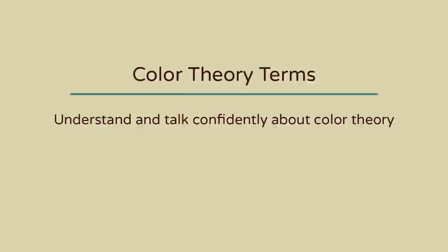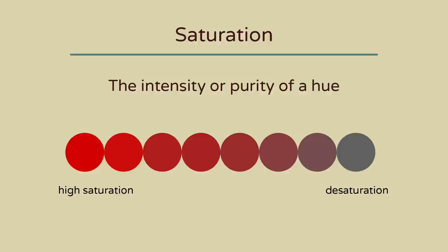Now let's go over some basic terms to help you better understand and talk about color theory. A hue is the name of a color, like red, blue, green, yellow, and orange.